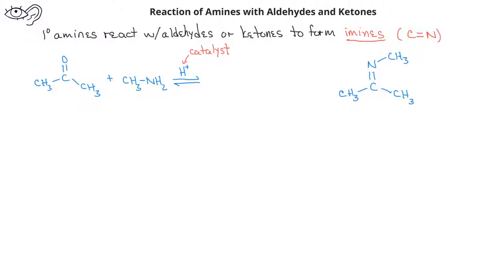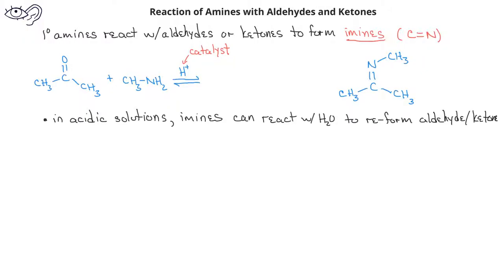If an imine is present in an aqueous acidic condition — meaning more than a catalytic amount of acid — the imine will undergo hydrolysis back to the original aldehyde or ketone. One of the intermediate structures in the formation of an imine is in fact a tetrahedral intermediate. However, this tetrahedral intermediate has both an oxygen and a nitrogen bonded to the same carbon, and as we've learned, a carbon bonded to two very electronegative atoms is an unstable tetrahedral intermediate. Through some other steps, this is converted to the imine.